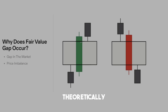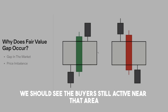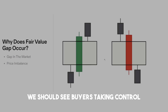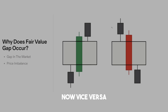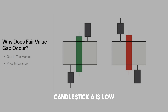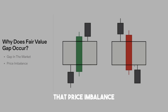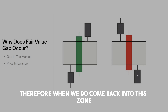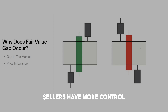When the stock theoretically comes back into this zone, we should see buyers still active near that area. Therefore, when we get a pullback back into that fair value gap, we should see buyers taking control and moving the stock even higher. Vice versa on the bearish fair value gap — candlestick A's low is where we start drawing the price imbalance and candlestick C's high is where we close it. In between, we see a gap where sellers had an impulsive move down, and when we come back into this zone, sellers have more control and there's a liquidity void.